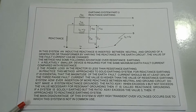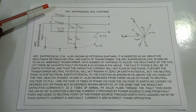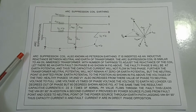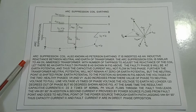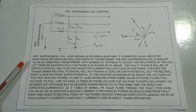Next is arc suppression coil earthing, also known as Peterson earthing. An inductive reactance is inserted between the neutral and earth of a transformer. The arc suppression coil is similar to an oil-immersed transformer with a number of tappings to adjust the reactance of the coil.